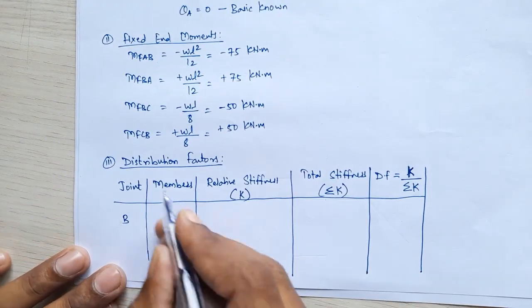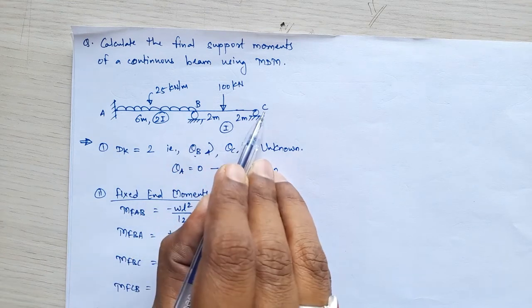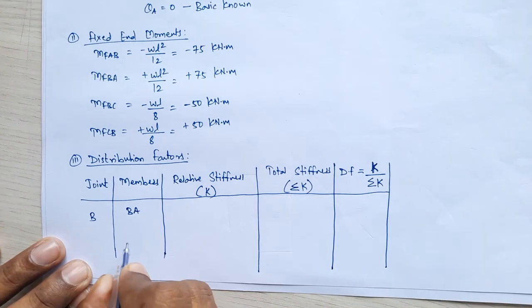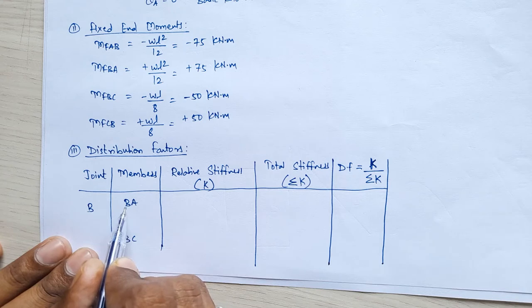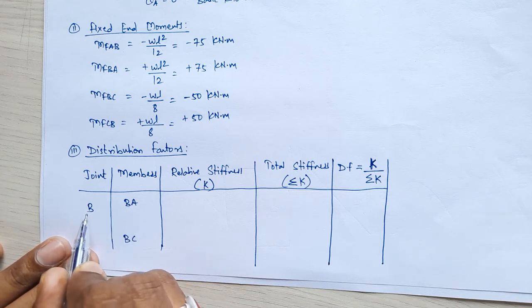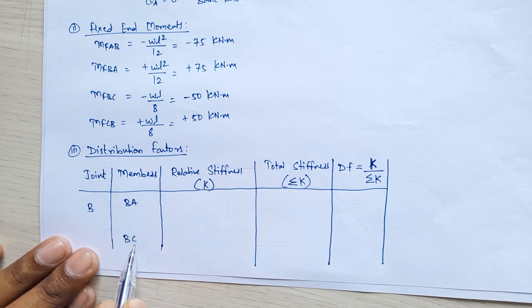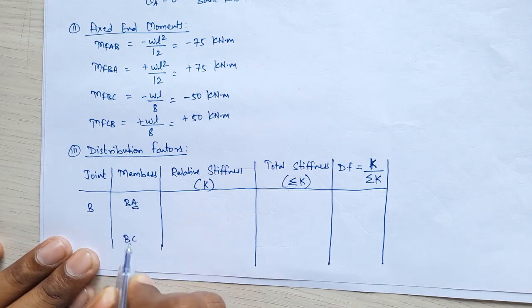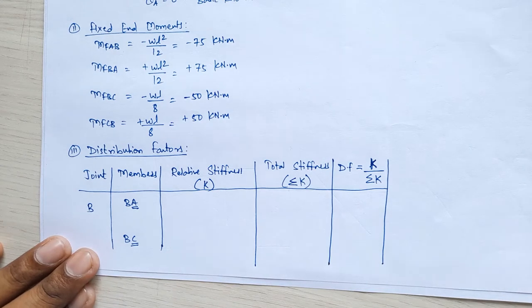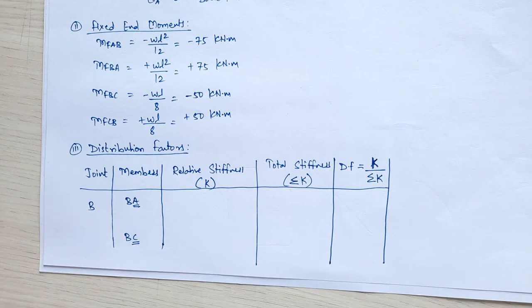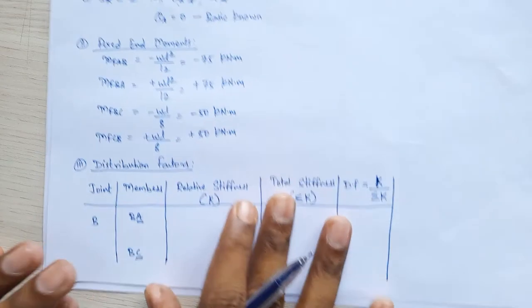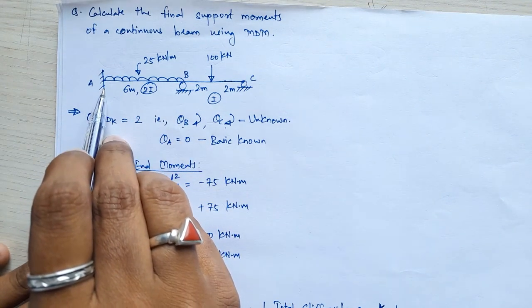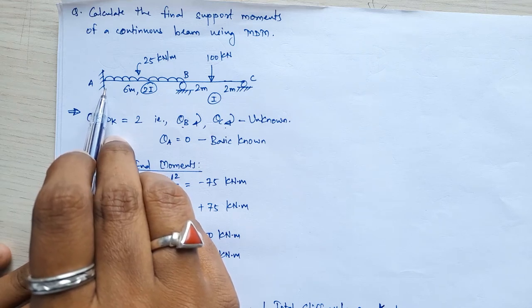Joint A has one member and joint C has one member, so I am considering only joint B. Members meeting joint B are BA and BC. While writing members, whatever joint you write first reflects as the near end, and the second initial is the far end. For member BA from joint B, B is the near end and A is the far end. For BC, B is the near end and C is the far end. You have to always check whether the far end support is capable or incapable.